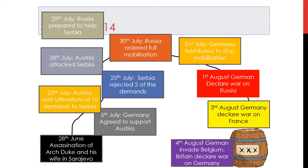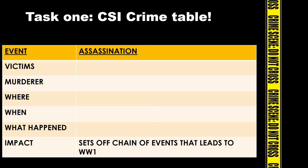On the 4th of August, Germany invaded Belgium to attack France - going through Belgium because it is a flat country, whereas the border between Germany and France was quite mountainous, making it easier to attack through Belgium. Britain had long before promised to defend Belgium against any invasion. Because Germany invaded Belgium, Britain then declared war on Germany, and World War 1 had started.